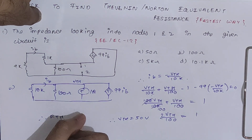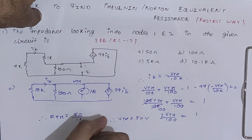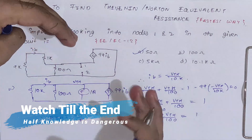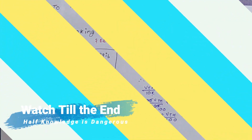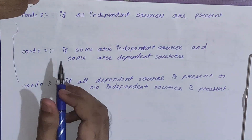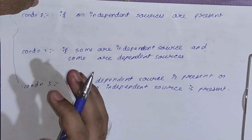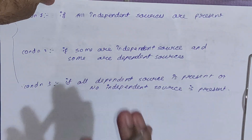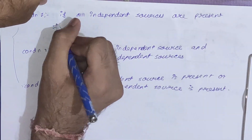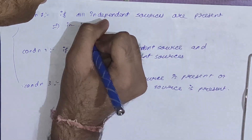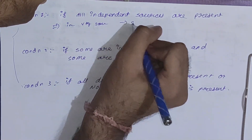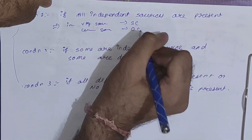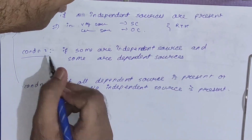Rth is 50 divided by 1 ampere, that is 50 ohm, so the correct option is A. Now let's see this trick in detail. The first condition is where all independent sources are present. If the circuit has all independent sources, you simply make independent voltage sources short circuit and current sources open circuit to get Rth.